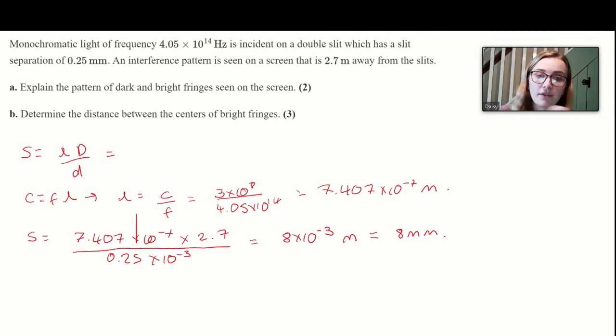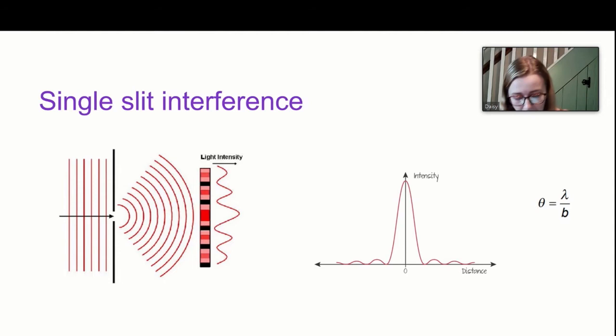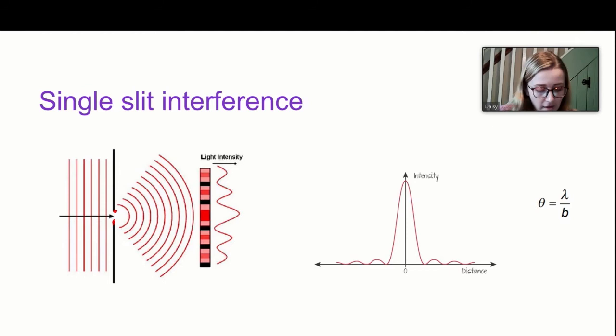This is where the standard level content ends — so standard level students, thanks for watching. Higher level students, let's move on to chapter 9. The first thing to think about is single slit interference. You might imagine that if we removed one slit there would be no interference — we're just shining light through a hole. But actually, light passing through the top half of the slit interferes with light passing through the bottom part of the slit, giving us interference in much the same way as a two-slit pattern.